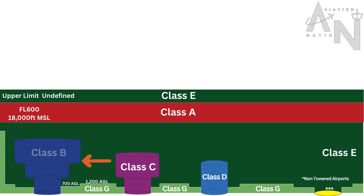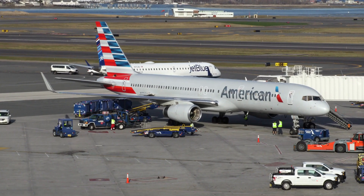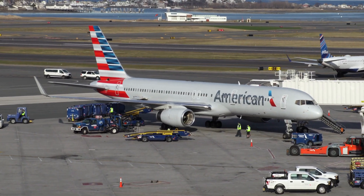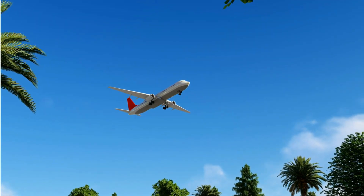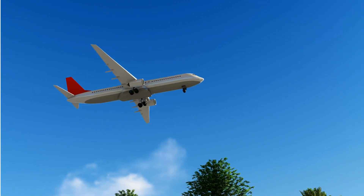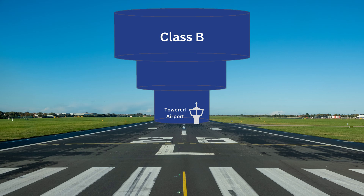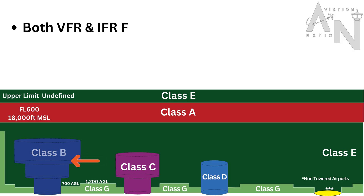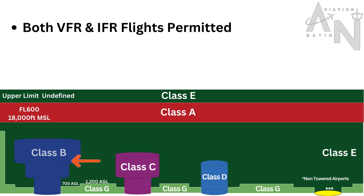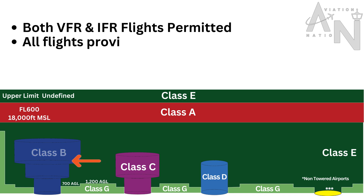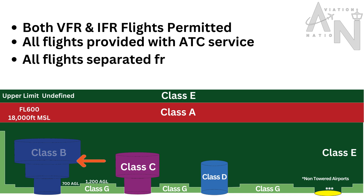Moving down, we have Class B airspace. Class B airspace is found around busy airports, designed to keep aircraft orderly during takeoff and landing. It resembles an upside-down wedding cake, with multiple layers that gradually expand as you move away from the airport. In Class B airspace, both IFR and visual flight rules (VFR) flights are allowed, but you must receive clearance from air traffic control. All flights are provided with ATC service, and all flights are separated from each other.